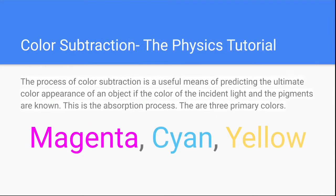The Physics Tutorial also has this color subtraction definition: the process of color subtraction is a useful means of predicting the ultimate color appearance of an object if the color of the incident light and the pigments are known. This is the absorption process, and the primary colors are magenta, cyan, and yellow.